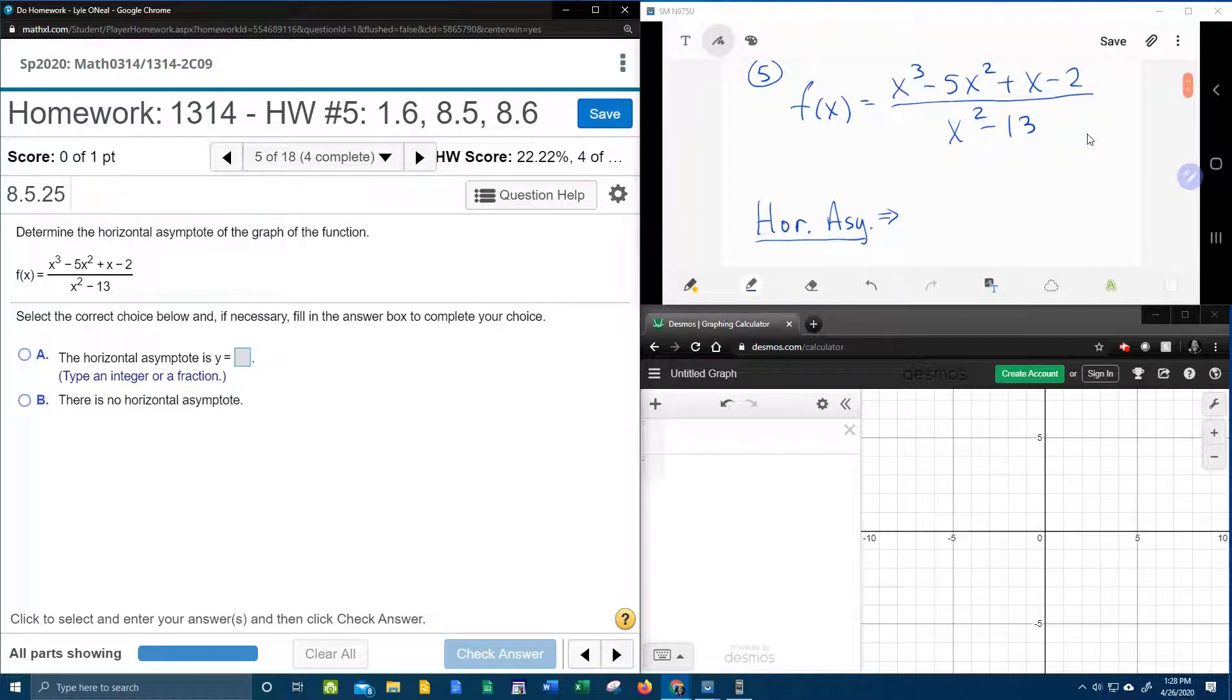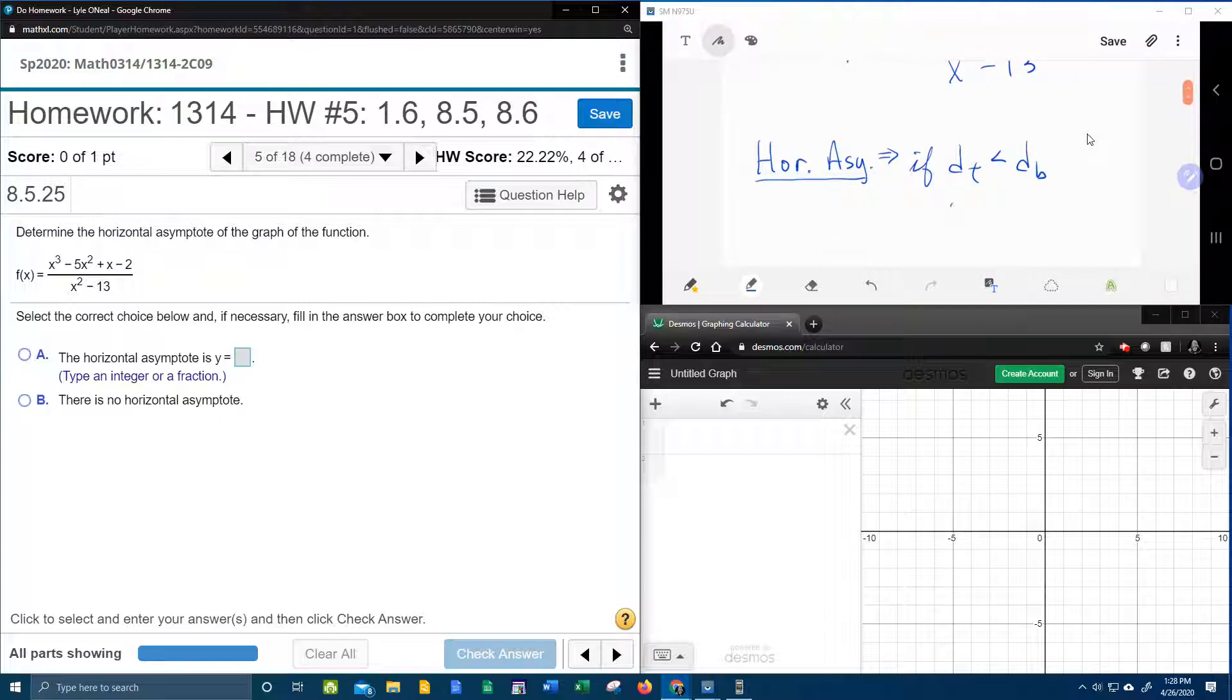So let's look at the three cases again. If the degree of the top is less than the degree of the bottom, then your horizontal asymptote is going to be y equals 0. There's no calculations, it's just y equals 0 in this scenario.